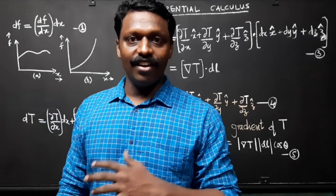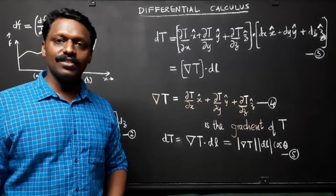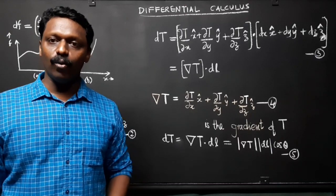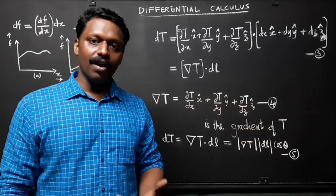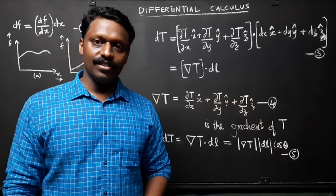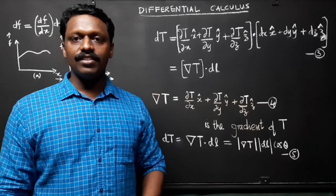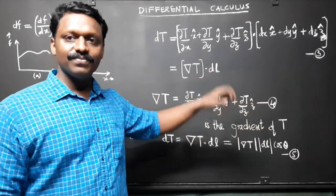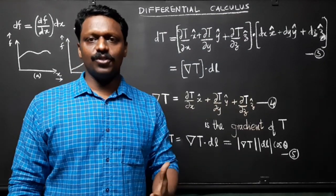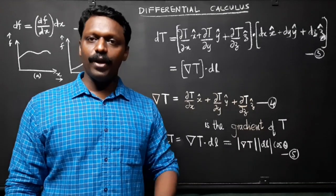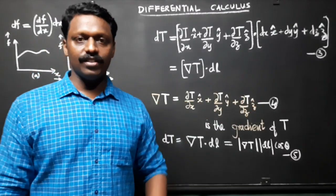Equation 2 is reminiscent of a dot product: dT equals [(∂T/∂x)x̂ + (∂T/∂y)ŷ + (∂T/∂z)ẑ] · [dx·x̂ + dy·ŷ + dz·ẑ], where x̂, ŷ, ẑ are the unit vectors in the three directions along positive x, y, and z axes respectively.